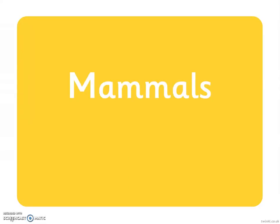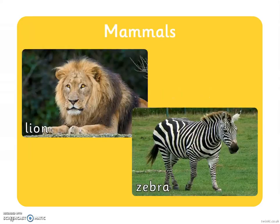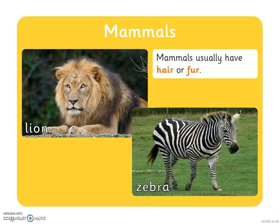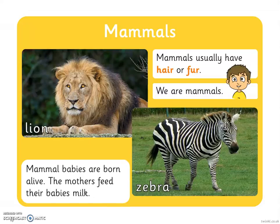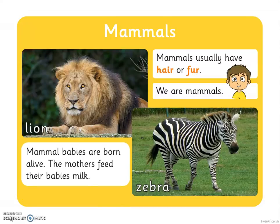The third group are mammals. Here are some pictures of different mammals. There's a lion and a zebra. Mammals usually have hair or fur. Human beings like ourselves are mammals. Mammal babies are born alive. This means mammals do not lay eggs. The mothers feed their babies milk.